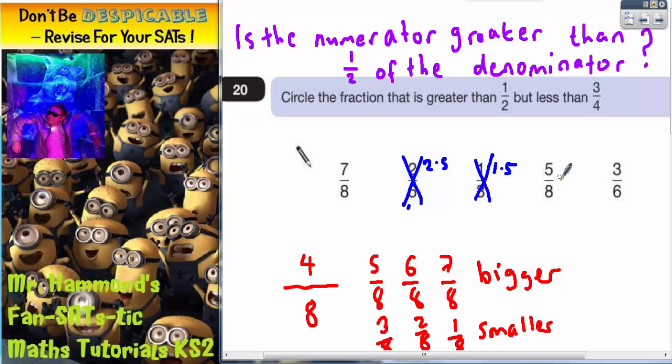Half of eight is four. And five is bigger than that. So that one can't be eliminated.